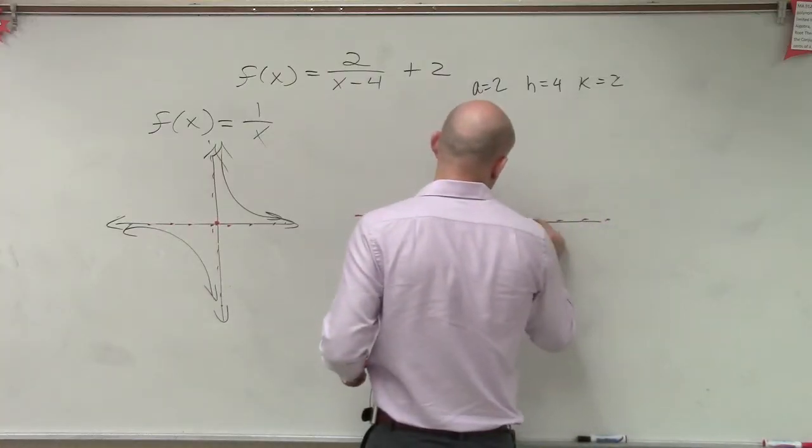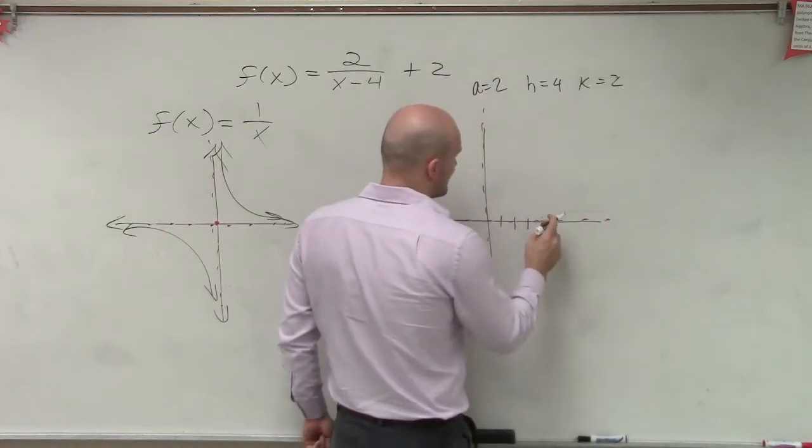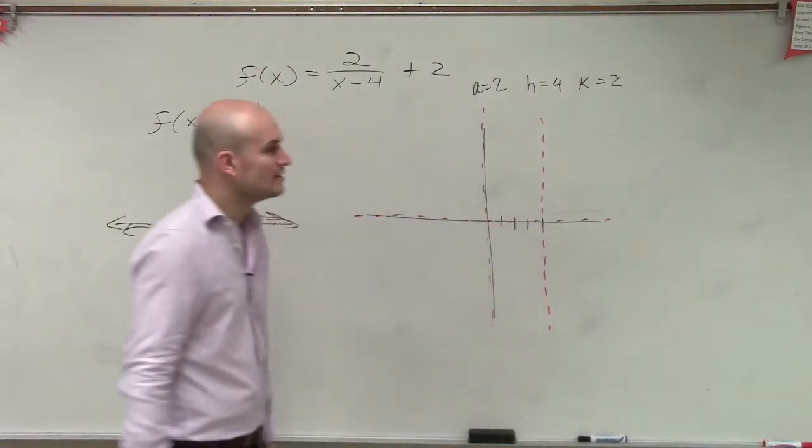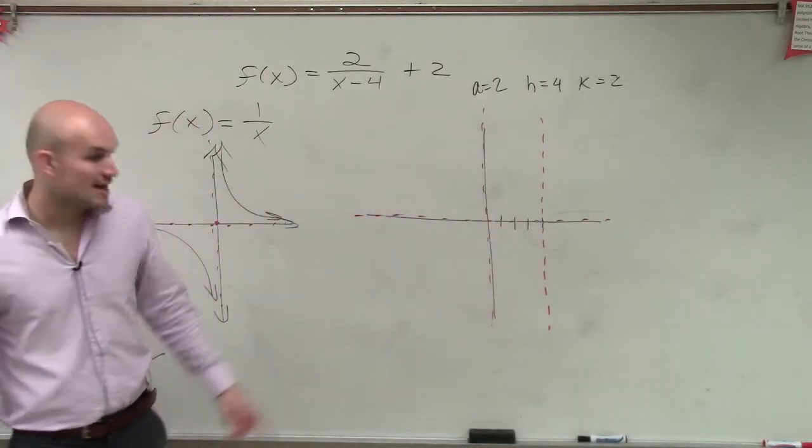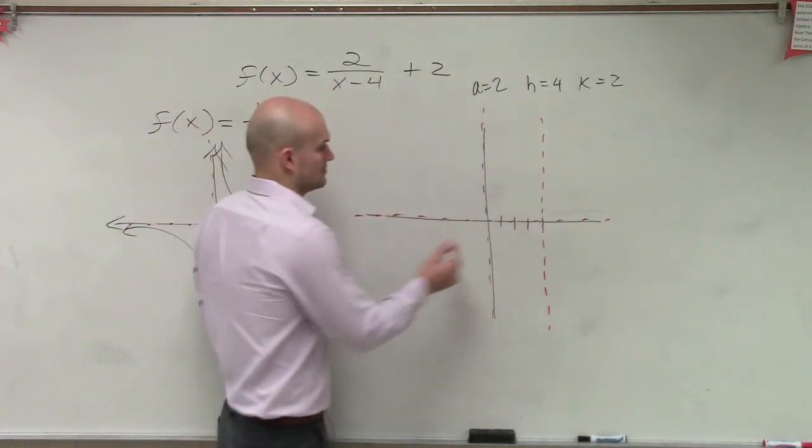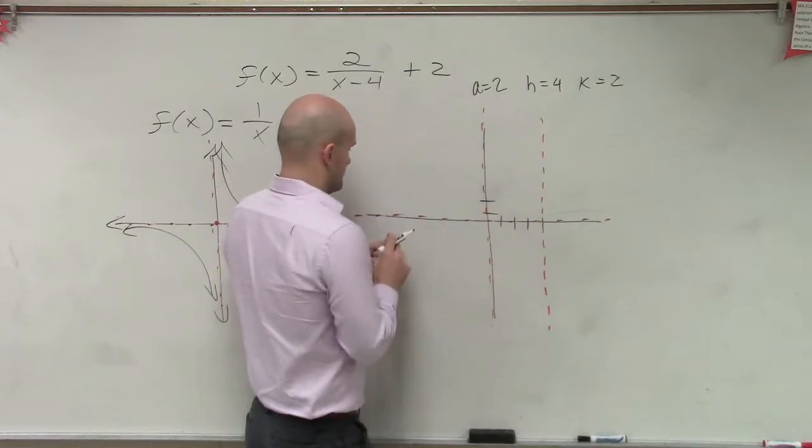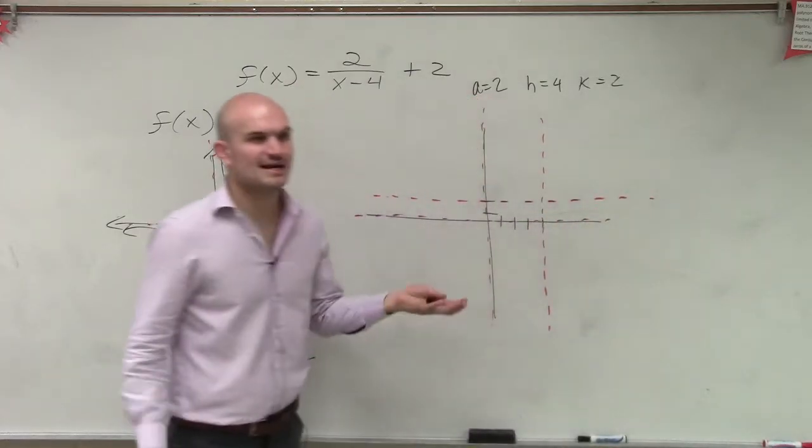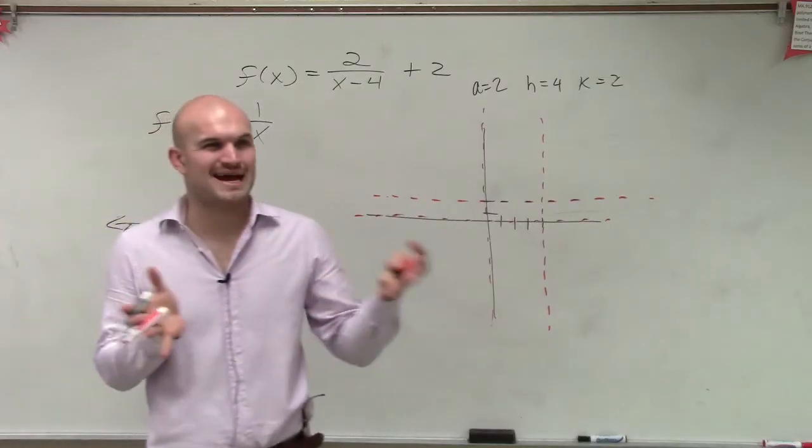So now I can say 1, 2, 3, 4. So now I'm going to have my vertical asymptote is going to be at x equals 4. And then I have my k tells me I have to shift my graph up 2. So you guys see how I can apply the transformation by using my asymptotes?